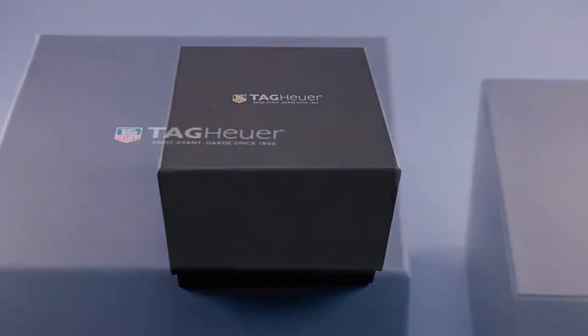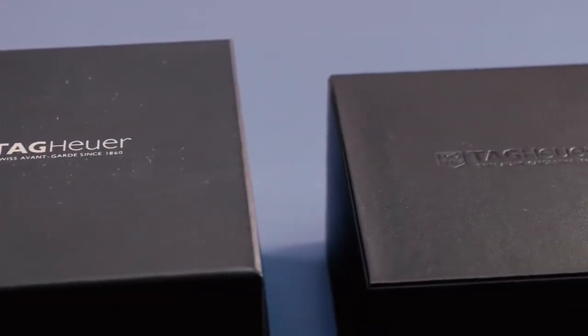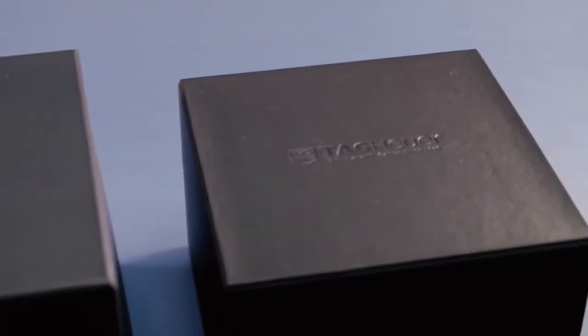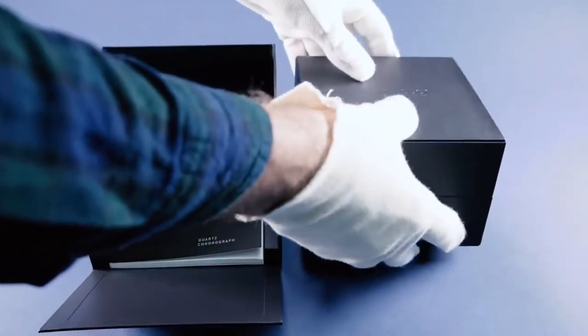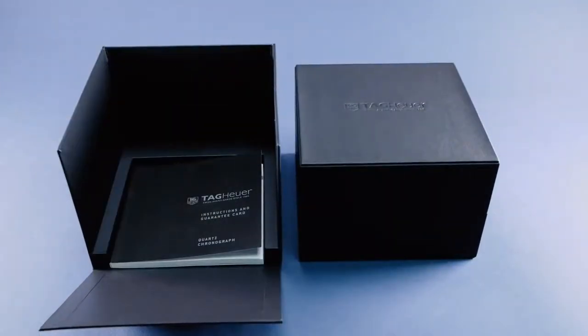The presentation box comes in two parts. The first is the outer box with the drop-down front containing the instructional booklet and guarantee card neatly stored in the space beneath the main box.